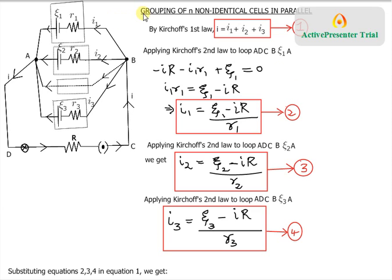In this video, I will be deriving the expression for the effective EMF of N non-identical cells which have been connected in parallel. For example, you have the first cell of EMF E1 and internal resistance R1, the second one of EMF E2 and internal resistance R2, and so on up to N cells. This is the nth cell of EMF En and internal resistance Rn, and they are all connected in parallel.